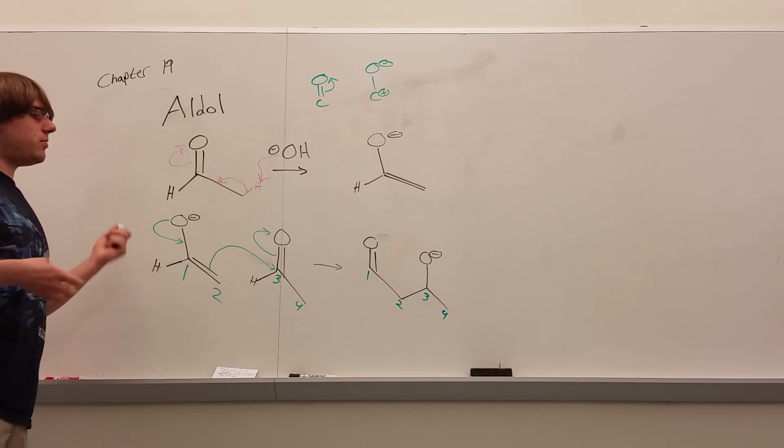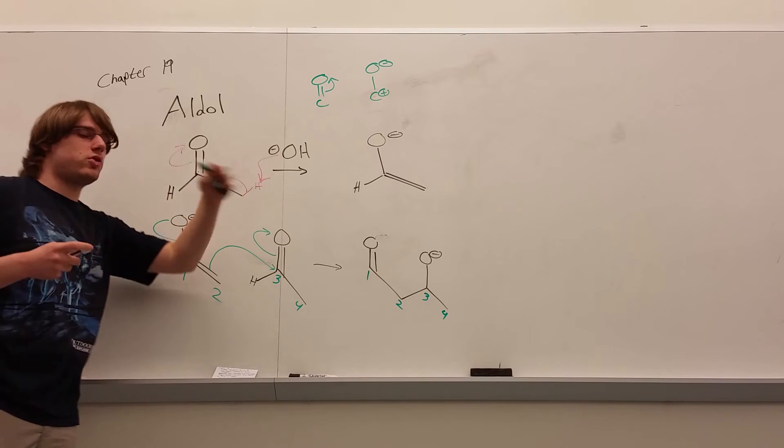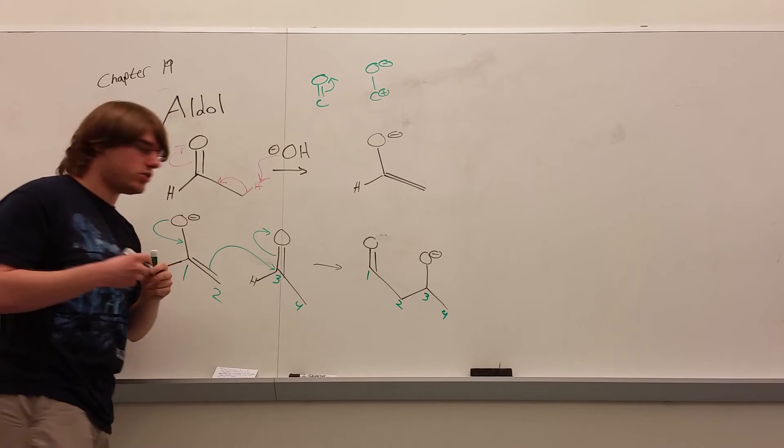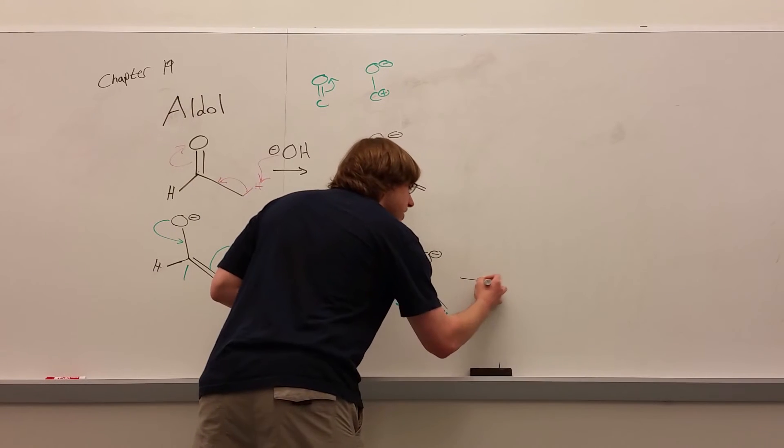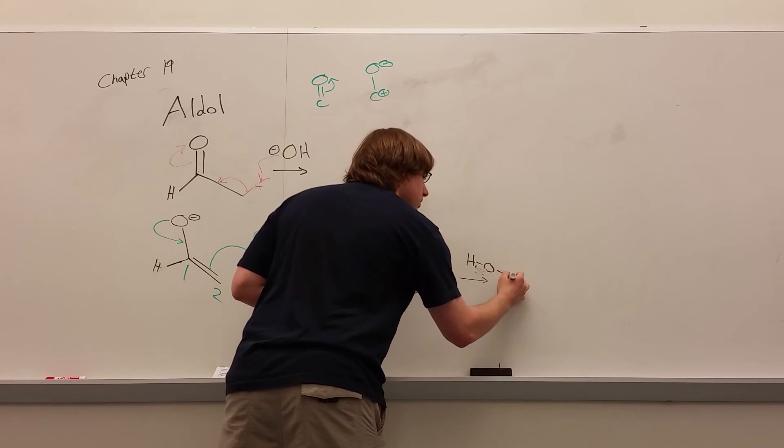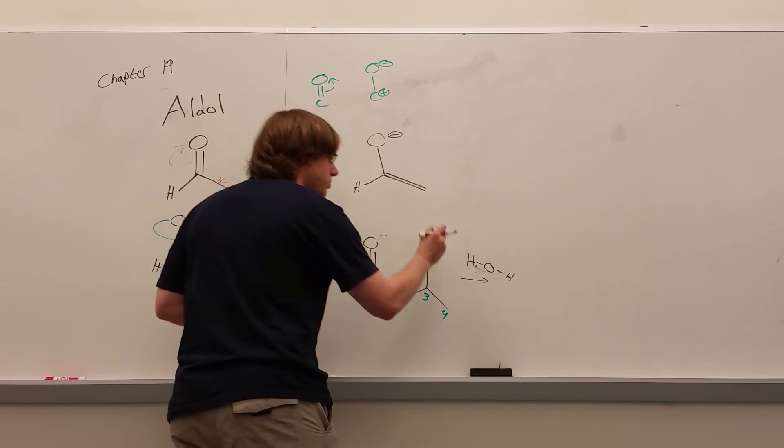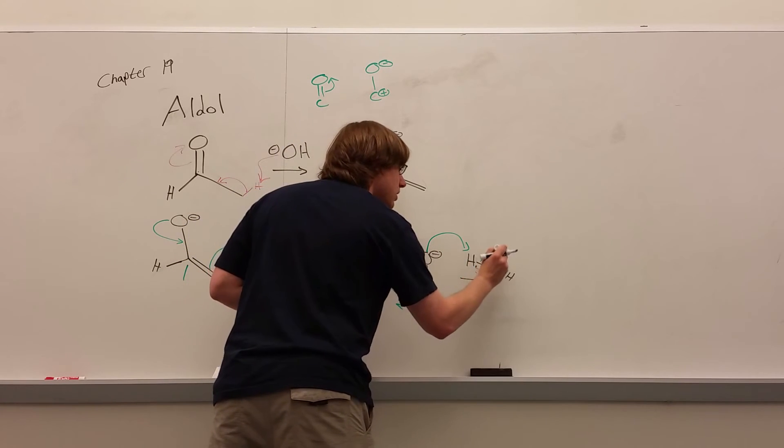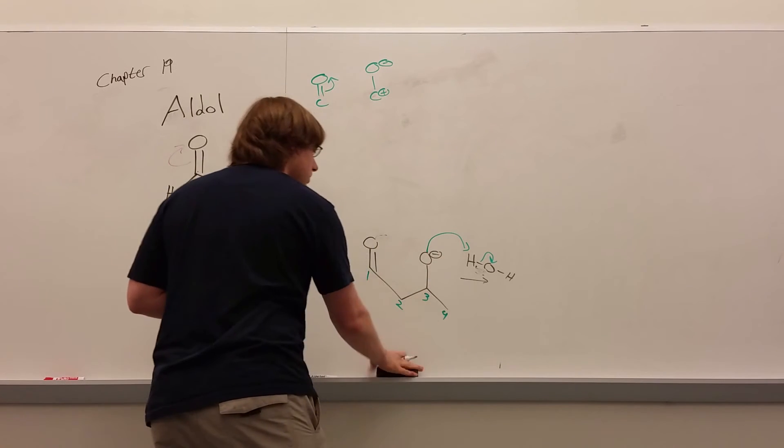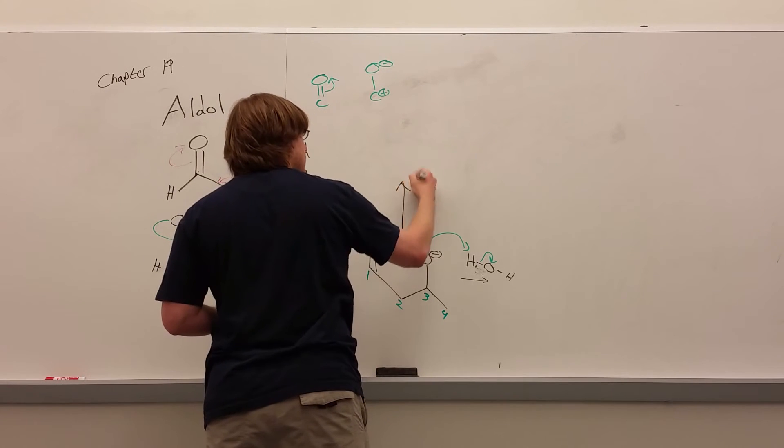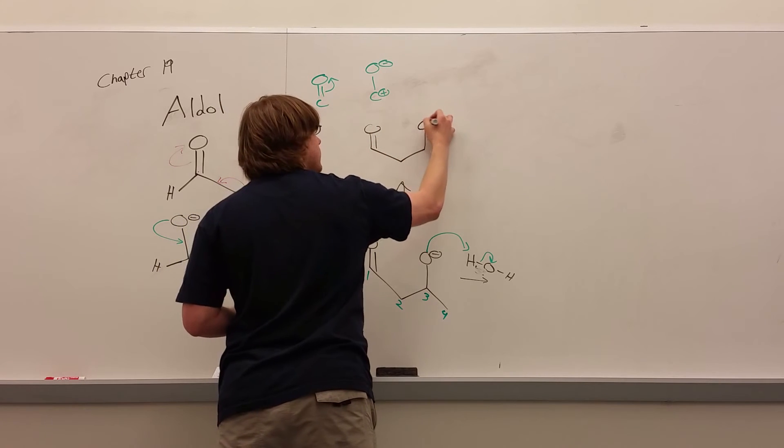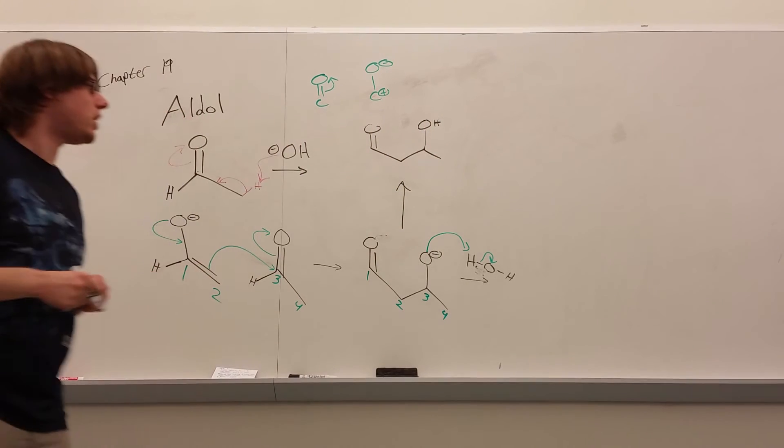Now typically we have this in a base, but there's always going to be a proton source. And in our very first step, we made water, right? This OH grabbed the hydrogen and became H2O, which means at the end of this reaction, there's some H2O floating around, which this O minus can deprotonate and become the final product, which would be this OH with four carbons.